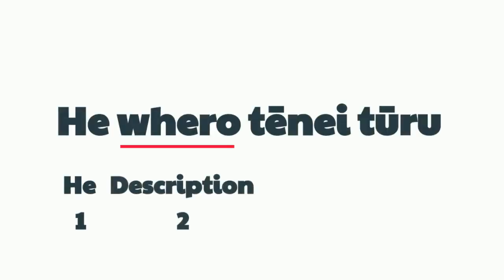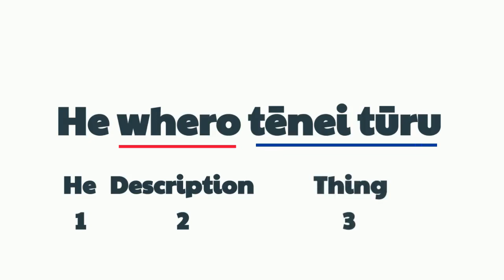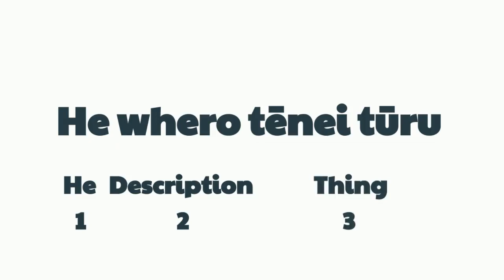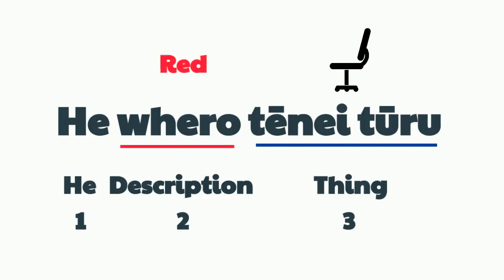It's important to remember that the description always follows the word he, and the thing that we're describing always goes at the end of the sentence. When you say this chair is red, this chair is the thing, and red is the description of the chair. He whero tēnei tūru — this chair is red.